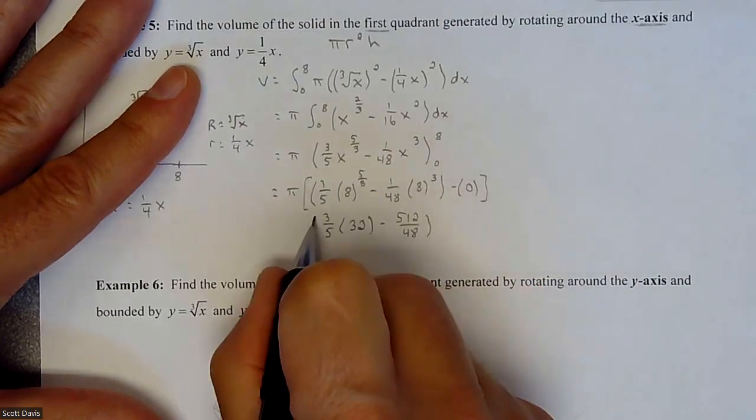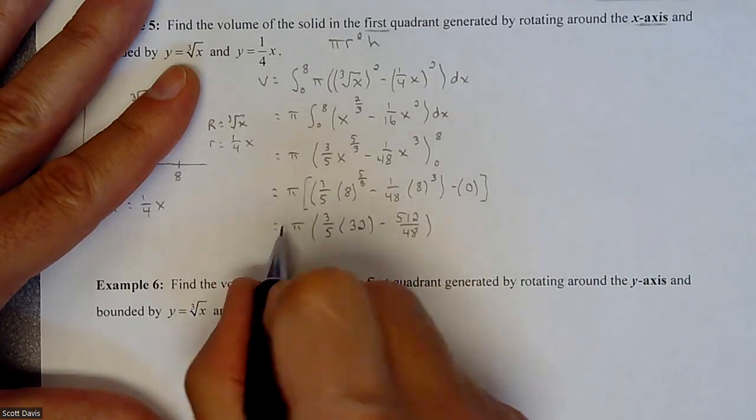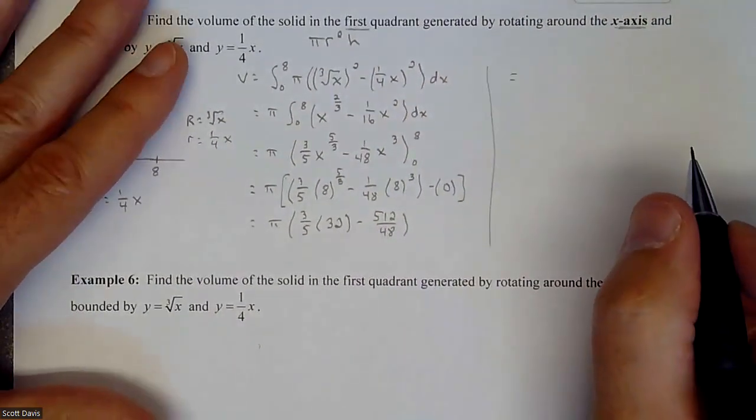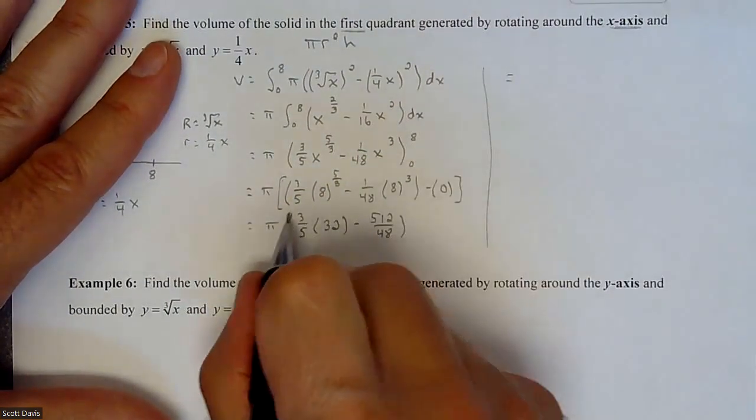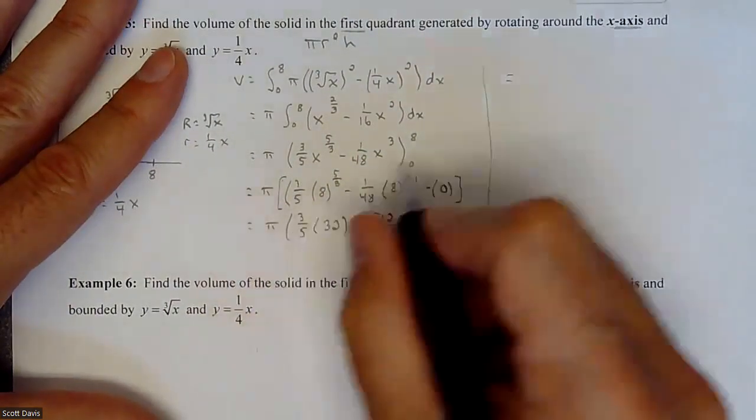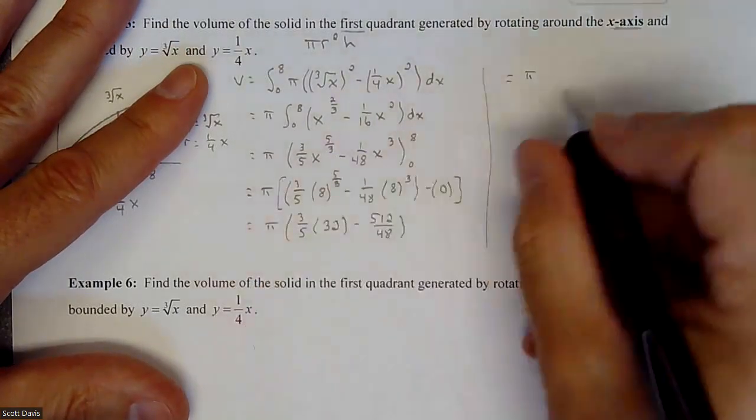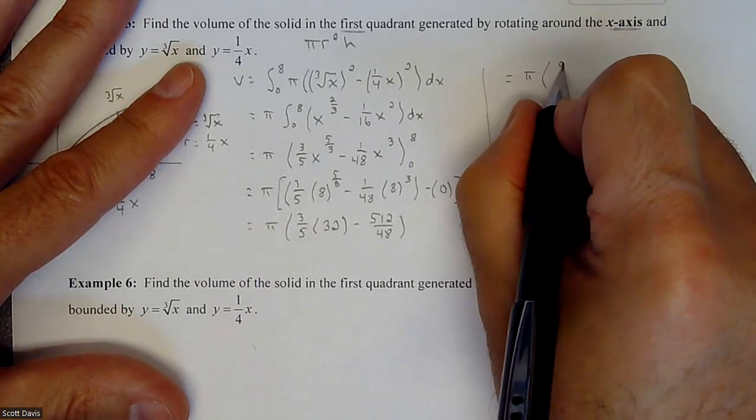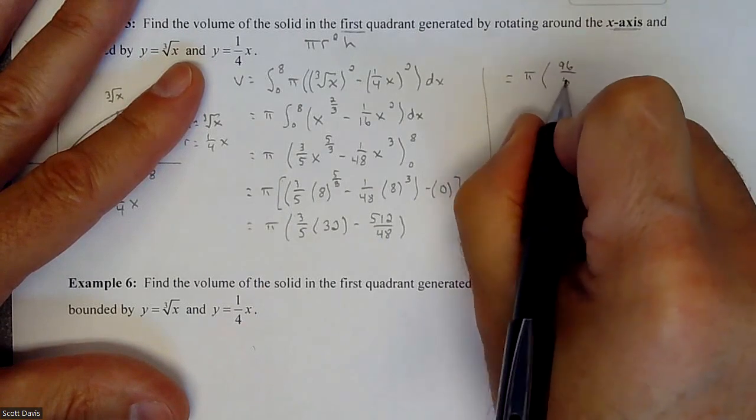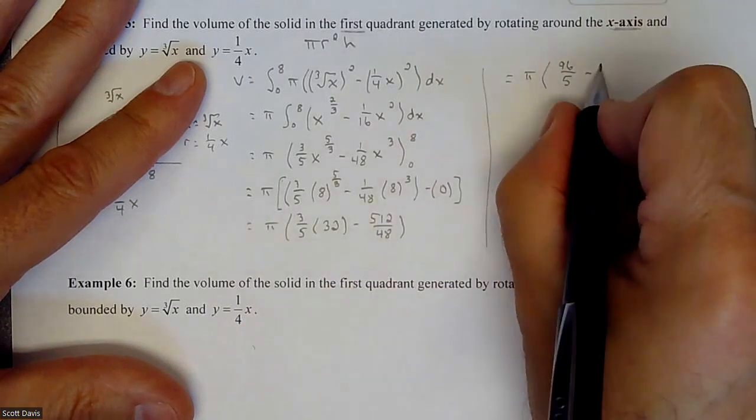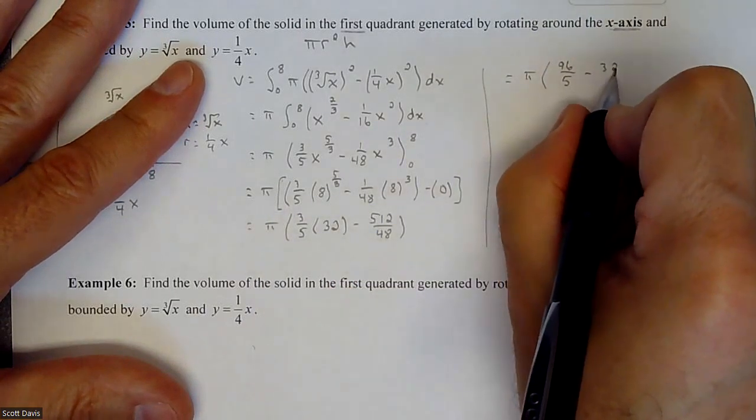So three fifths times 32 minus eight to the third is 512, so 512 over 48. This whole thing is going to be multiplied by π. If I simplify this out, this ends up where I multiply that together, I'm going to get a 96 fifths. If I simplify that, that becomes a 32 thirds.